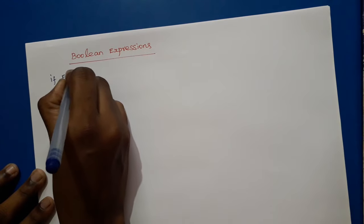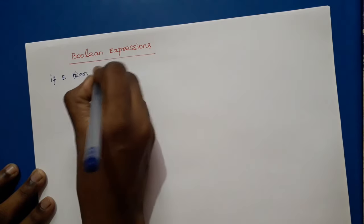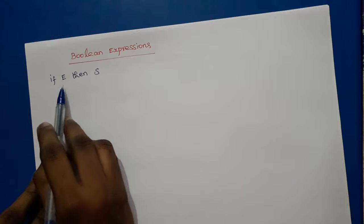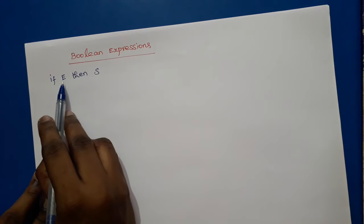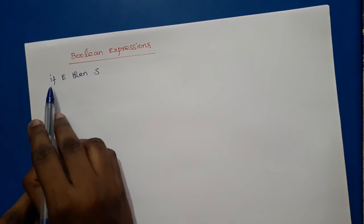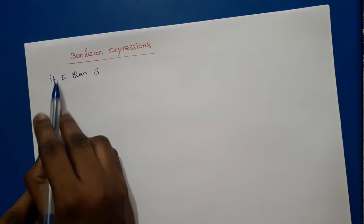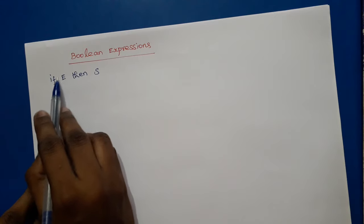For example, if-then, if-then-else, and while statements. So if E then statement — this expression E is a Boolean expression. In flow of control statements, Boolean expressions are used as conditional expressions because the result is true or false. Boolean expressions can have two Boolean values: true and false.